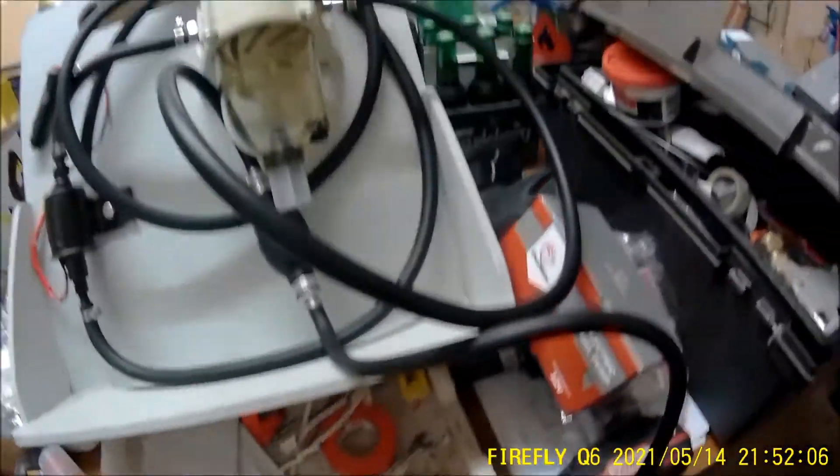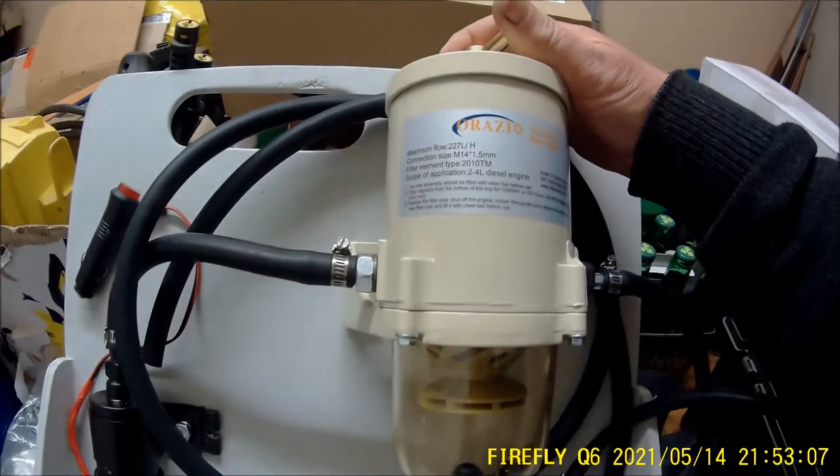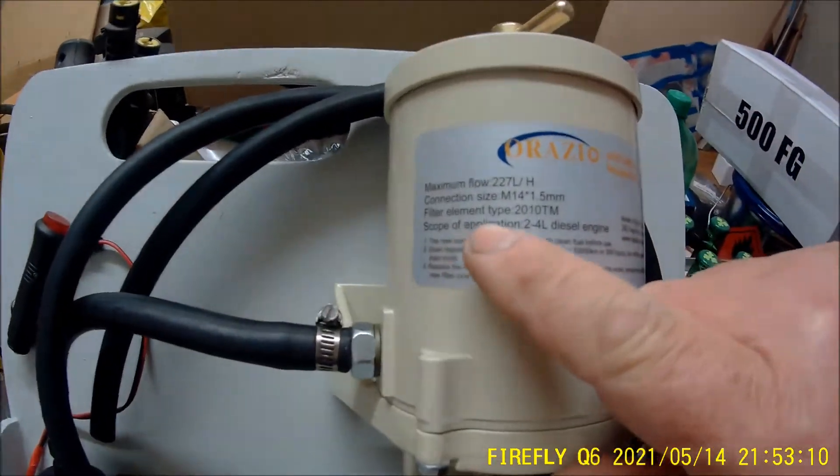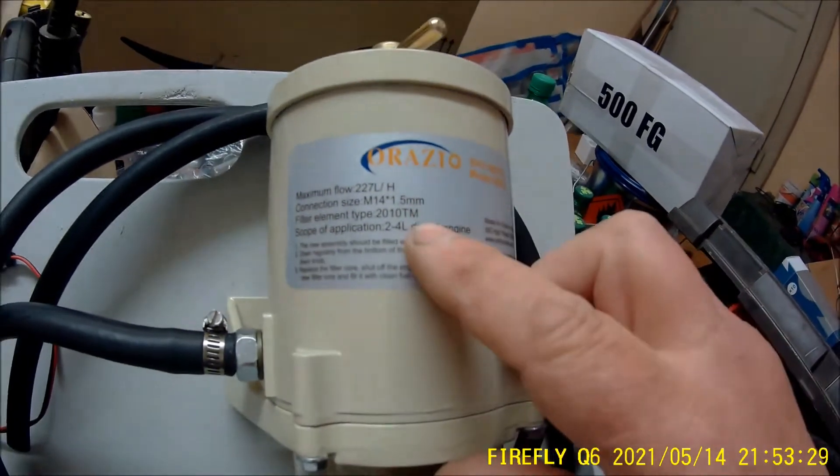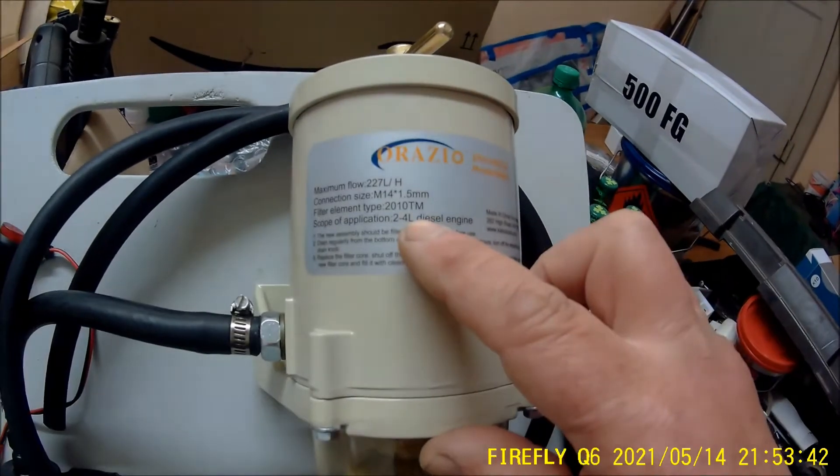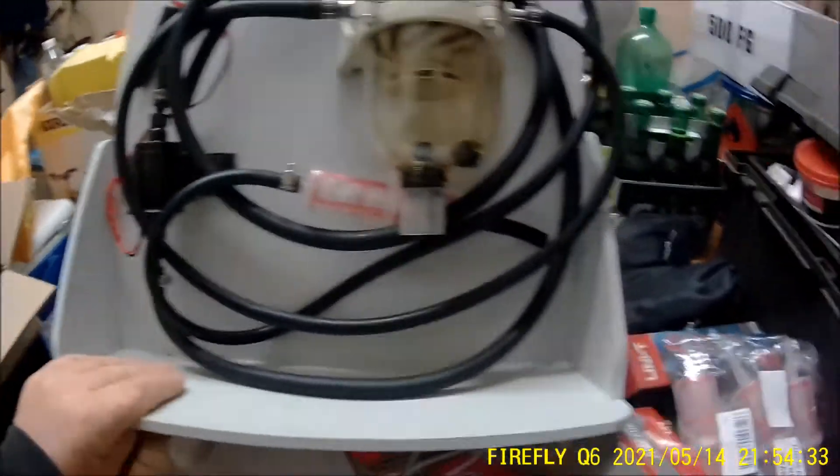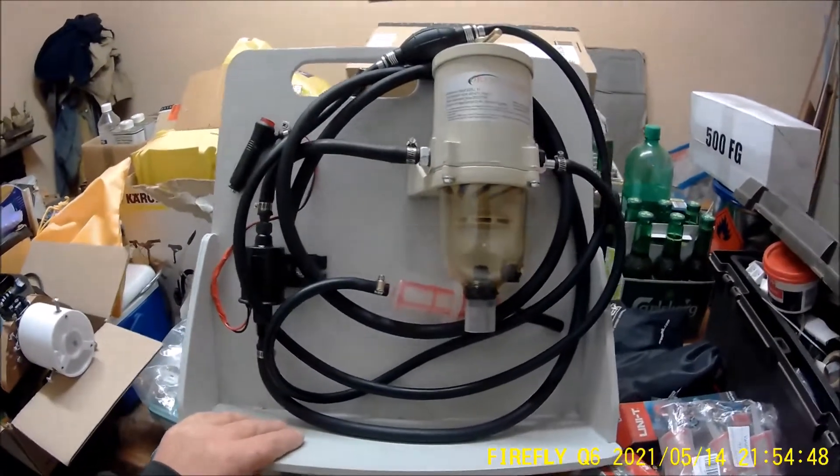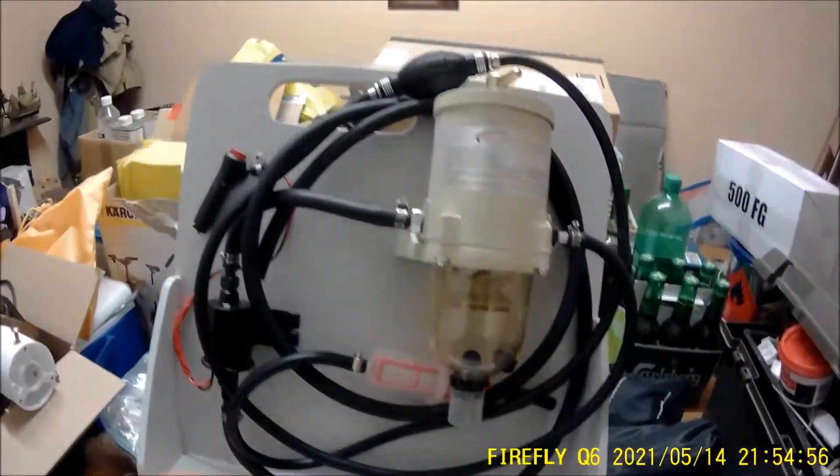So that's it basically. Just made up a small frame. The filter has no marking on it even, but it does say it's a 2010 TM 10 micron. I ordered the 10 micron and 30 micron filter elements. I cut out a slot for a little handle so that it's portable, and all the hoses are tidy within the envelope of the timber frame.